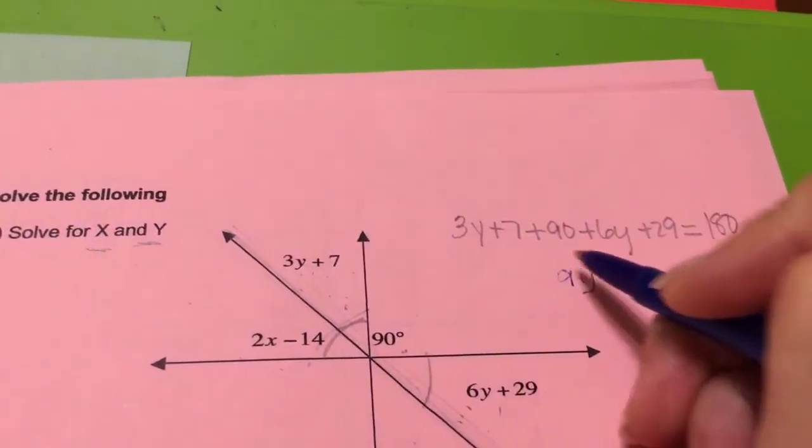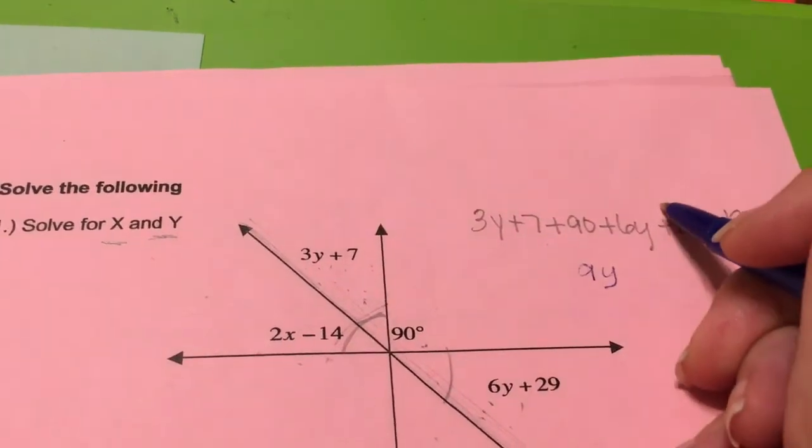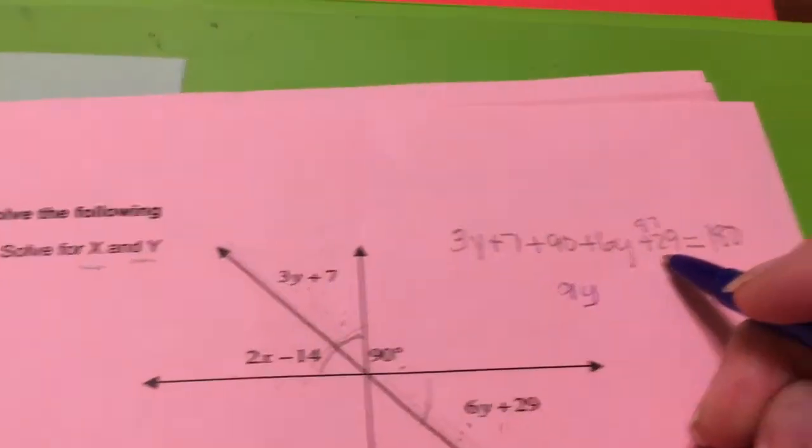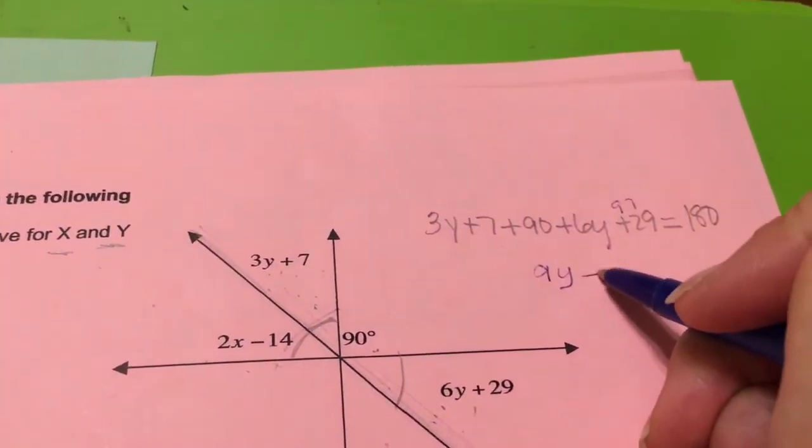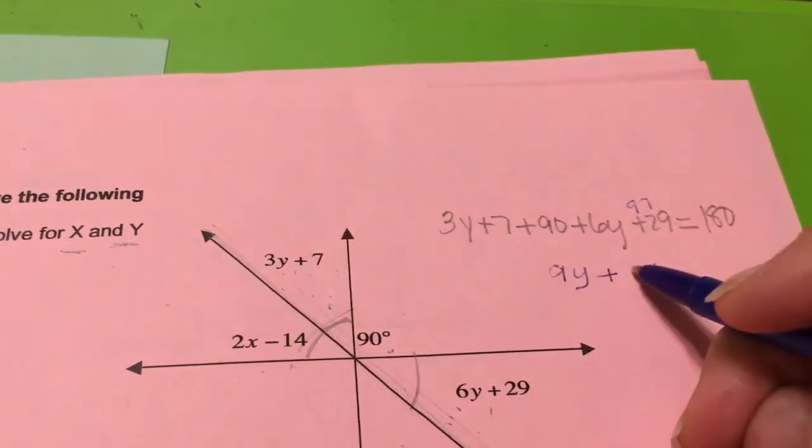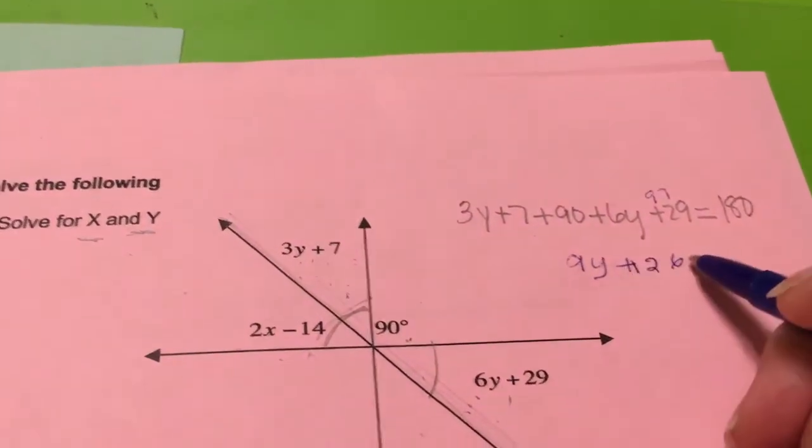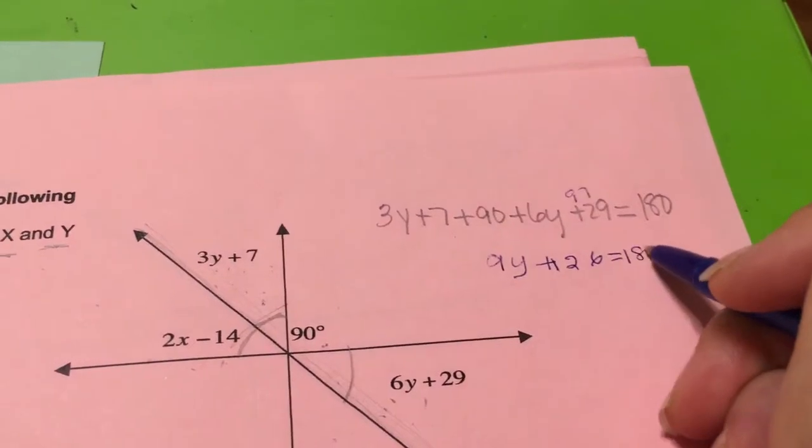This is going to become 9y. Now 97, 97 and 29 equals what do we get? 126 equals 180.